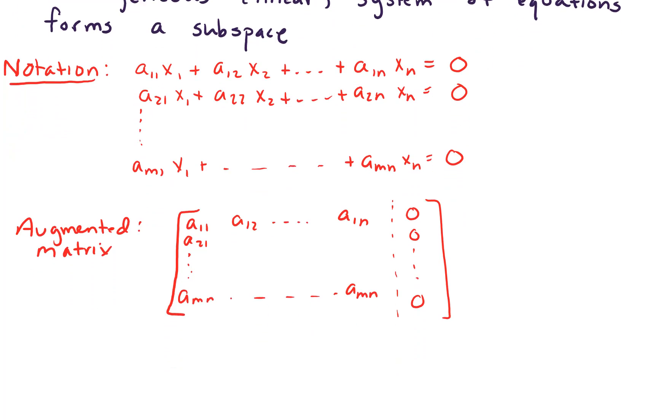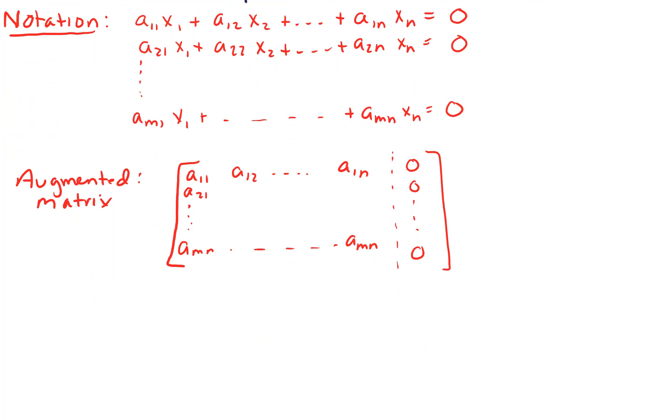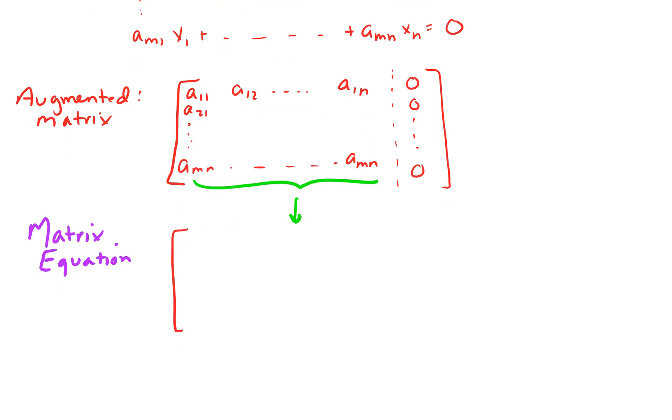But there's another way of representing this quite nicely, and this is something called a matrix equation. In the matrix equation, I'm going to take and write the coefficient matrix as A.